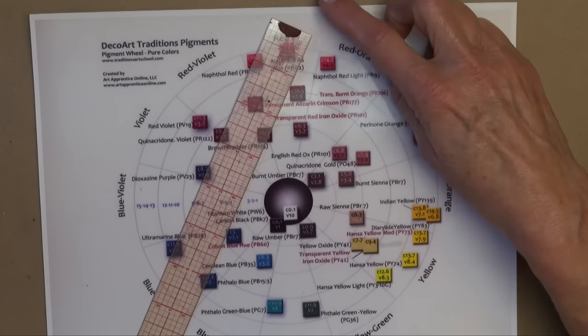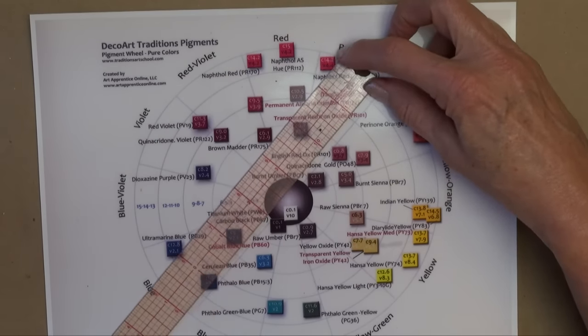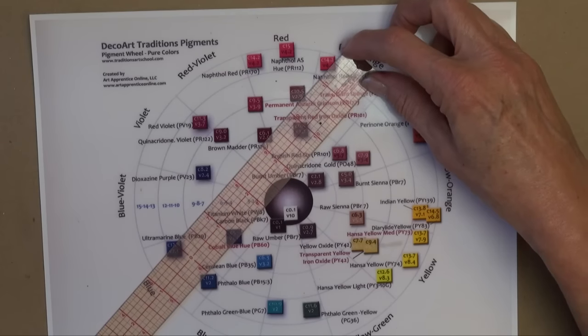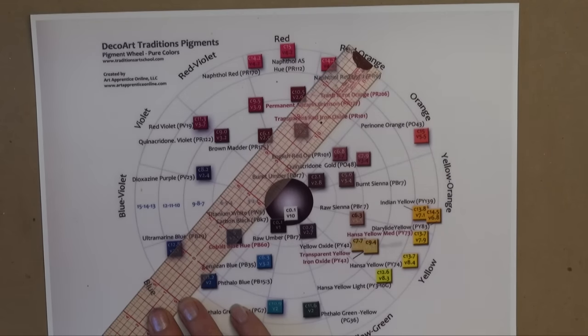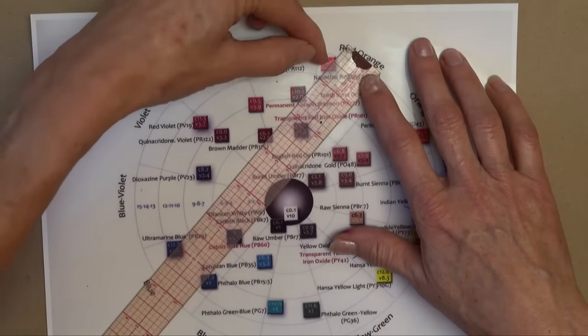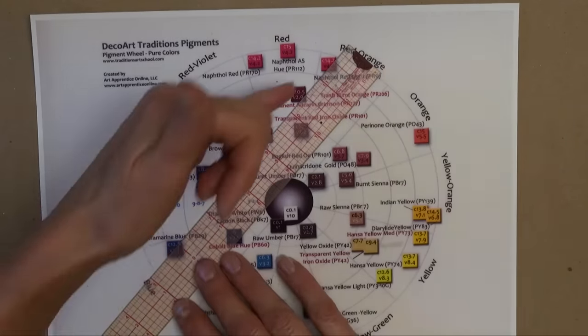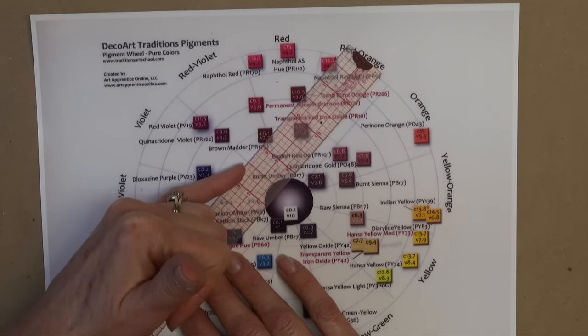Now look what happens if I mix naphthol red light and ultramarine blue together. It's still going to make a burgundy. It's not going to be as intense of a burgundy. So maybe you want less chroma saturation in the burgundy. Then I would come over to this naphthol red light, mix it with ultramarine blue, and now look at this line. See how much closer this line is towards the center of the wheel.